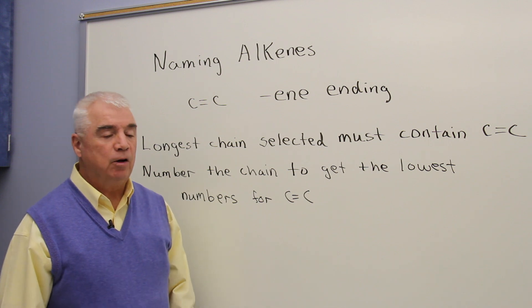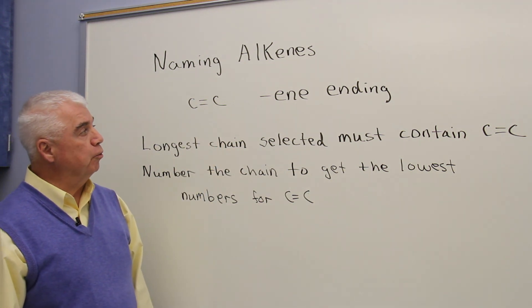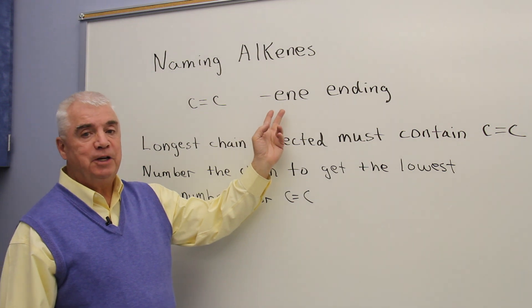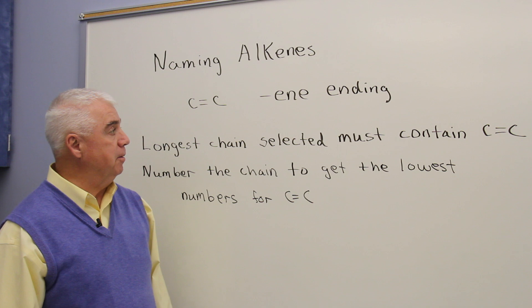Naming alkenes. Alkenes have a carbon-carbon double bond as their functional group. The IUPAC name of alkenes ends in E-N-E, the same as the family name.